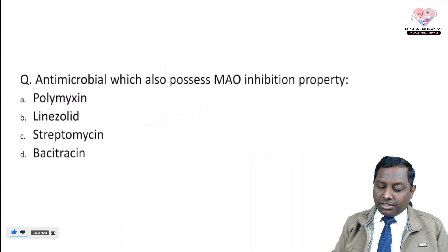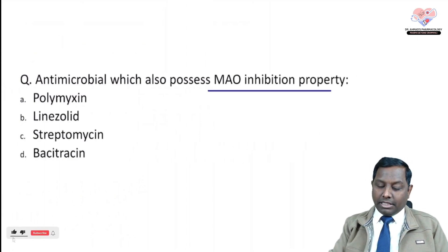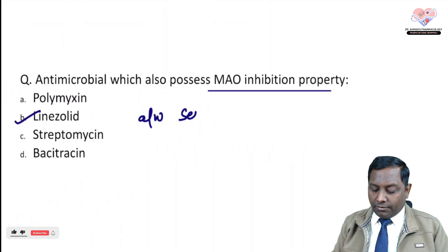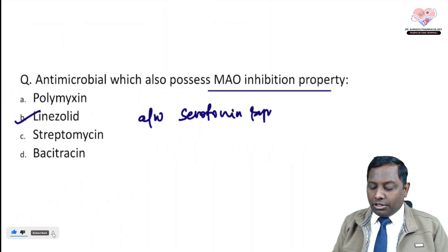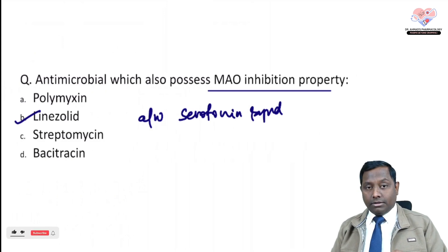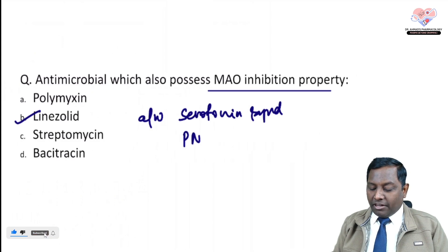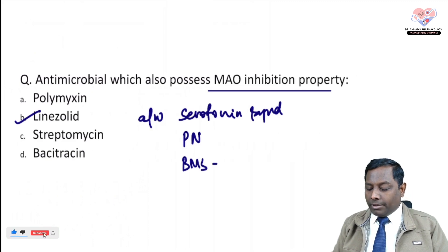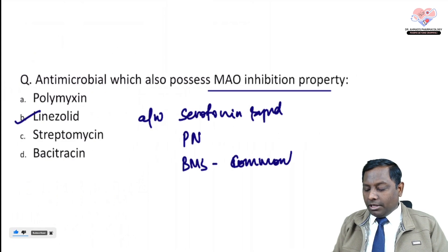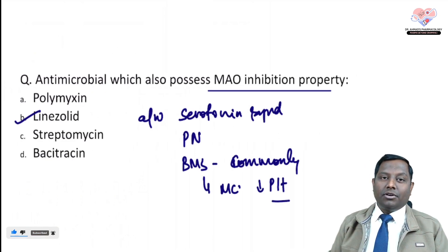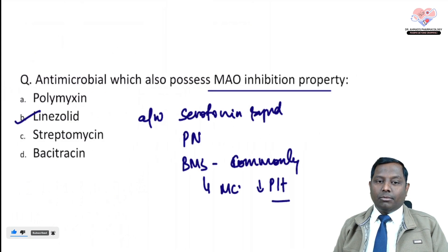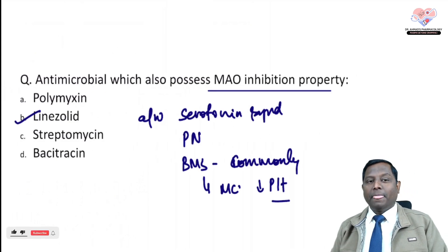The last question: which antimicrobial also possesses MAO-inhibiting property? The answer is linezolid. Because of its MAO-inhibiting property, linezolid is associated with serotonin syndrome — so use with caution if a patient is already on an MAO inhibitor. Linezolid is also associated with peripheral neuropathy and rarely optic neuropathy. Most commonly, it causes bone marrow suppression, and the most common manifestation is a decrease in platelet count, appearing after seven to ten days of starting therapy.